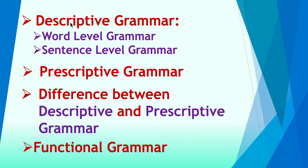Descriptive grammar has two levels: the first is word level grammar and the second is sentence level grammar. Then we have prescriptive grammar, and we shall discuss the difference between descriptive and prescriptive grammar, and then we have functional grammar.